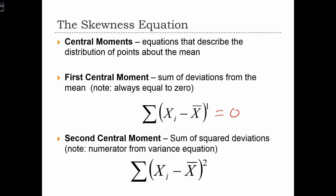Now, the second central moment is the sum of the squared deviations. We've seen this before from the variance equation, where the variance equals the sum of the squared deviations over n minus 1, at least in the sample case. So we use the second central moment to calculate variance.